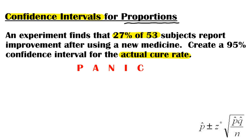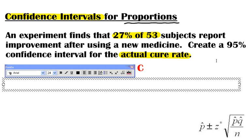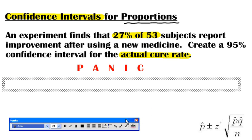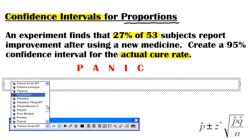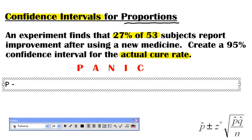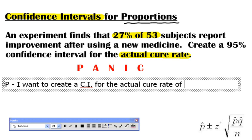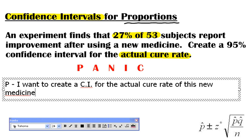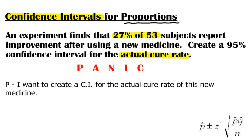So here we go. P is my parameter statement. I'm going to do some typing on this. It's a little bit easier for me to type these in than it is to write it in and you could probably see it a little bit easier as well. So P stands for parameter statement. I want to create a confidence interval for the actual cure rate of this new medicine.